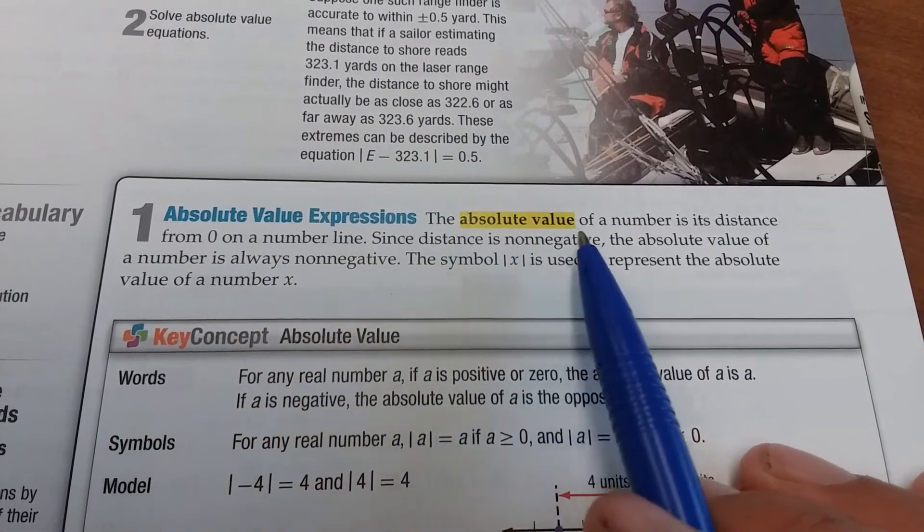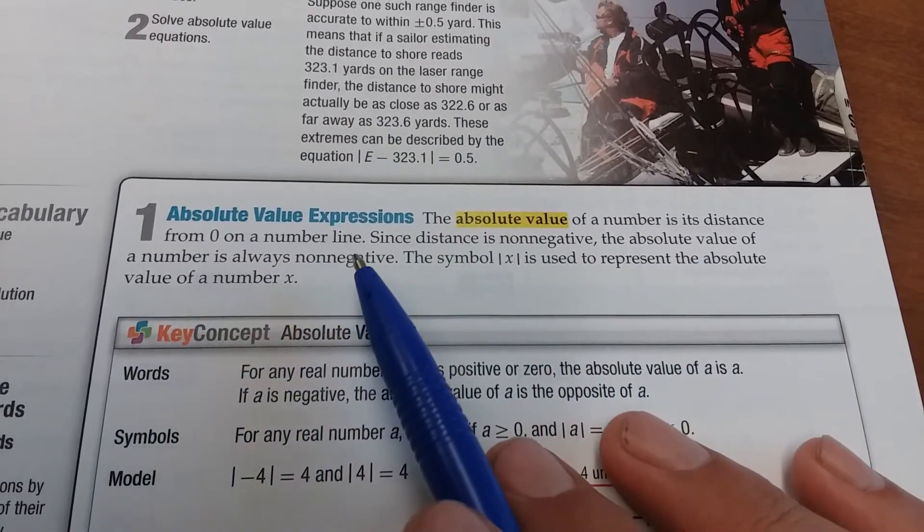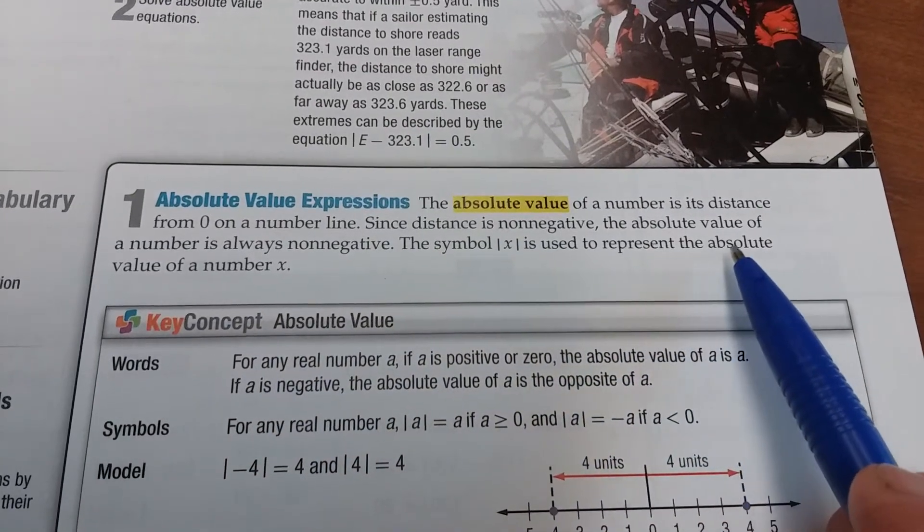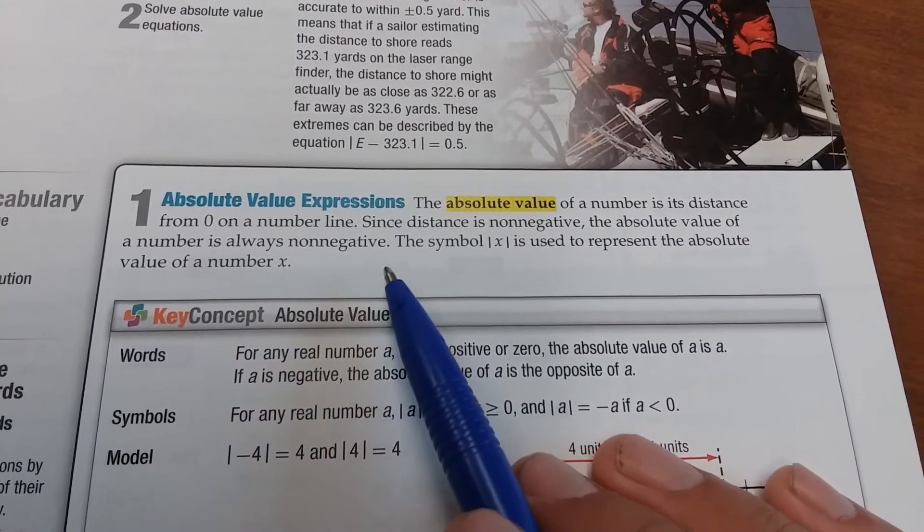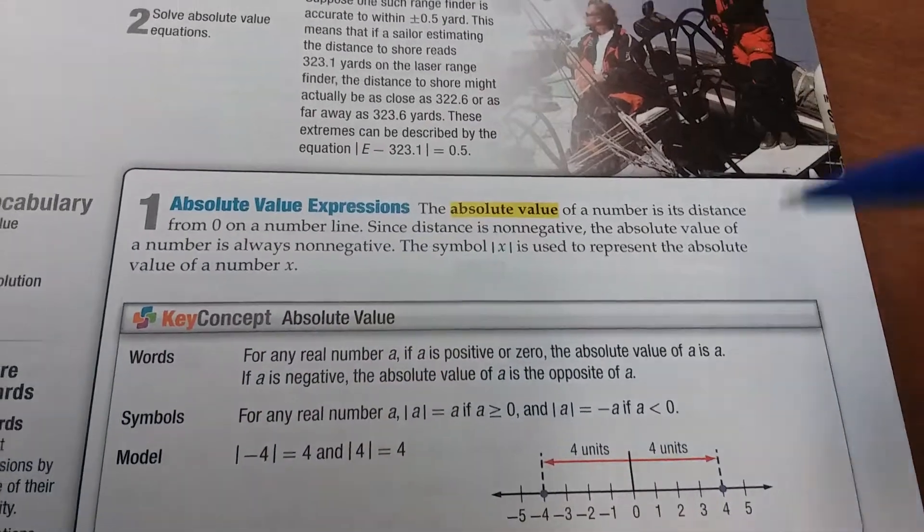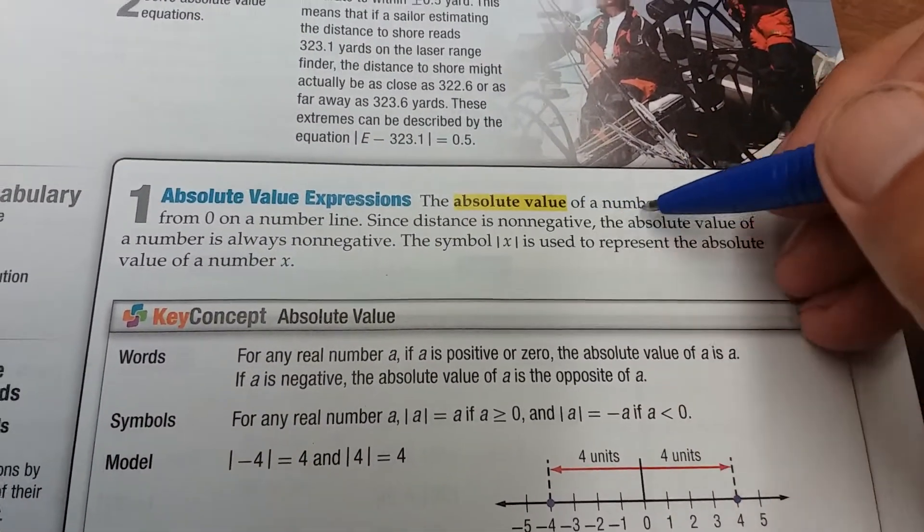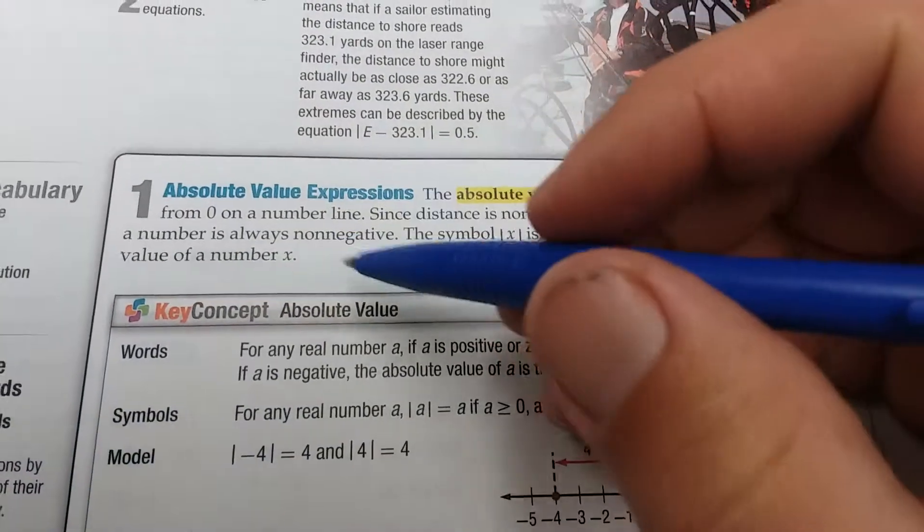Absolute value of a number is the distance from zero on a number line. Since distance is non-negative, the absolute value of a number is always non-negative. The symbol, these two tall lines around the x, is used to represent the absolute value of a number x.